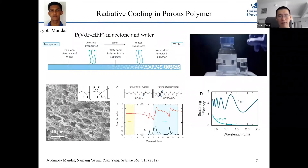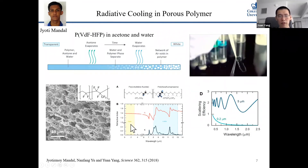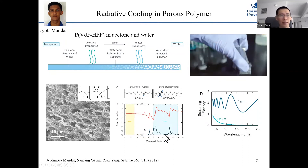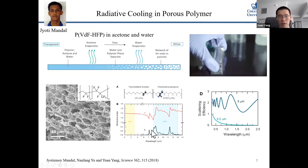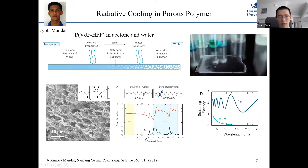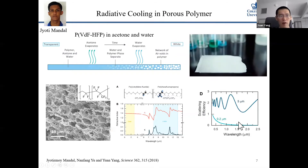PVDF-HFP has similar properties to water in the solar spectrum — there is almost no absorption. In the infrared part, there are lots of molecular vibrations so it absorbs infrared light, leading to high emittance. The nanostructure and microstructure will better scatter light. Overall, these structures should give us high reflectance and high thermal emittance.